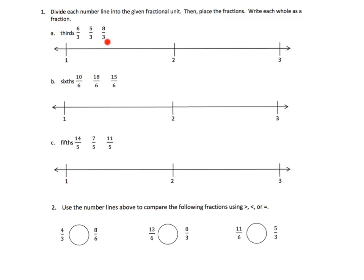Let's get started. The first one right here is thirds. So, they tell us to first divide everything into thirds. And then we're going to locate where six-thirds is. Well, six divided by three is two, so that means we know six-thirds is right here. And so, five-thirds is right here. Five-thirds.